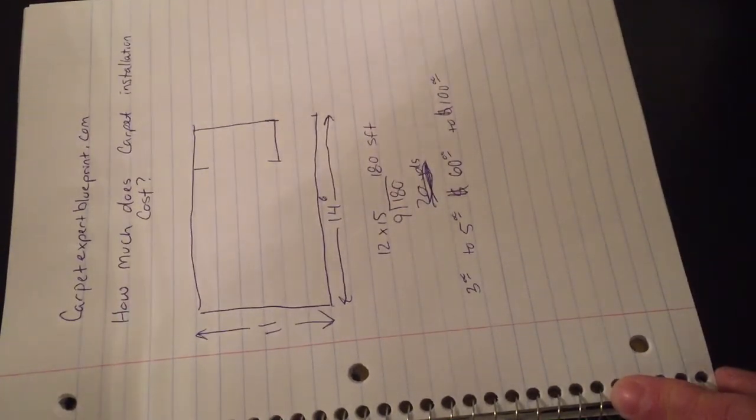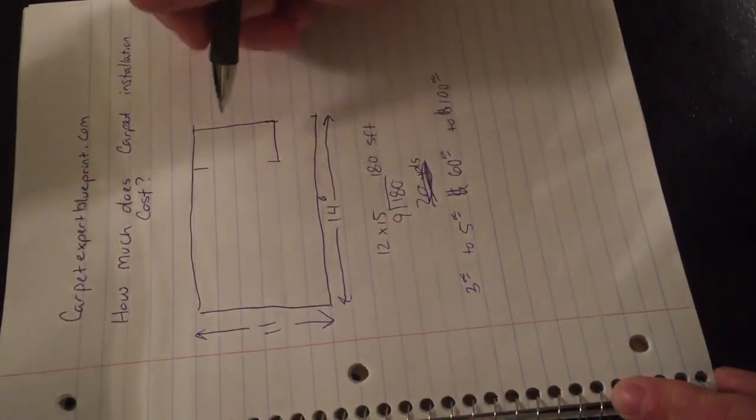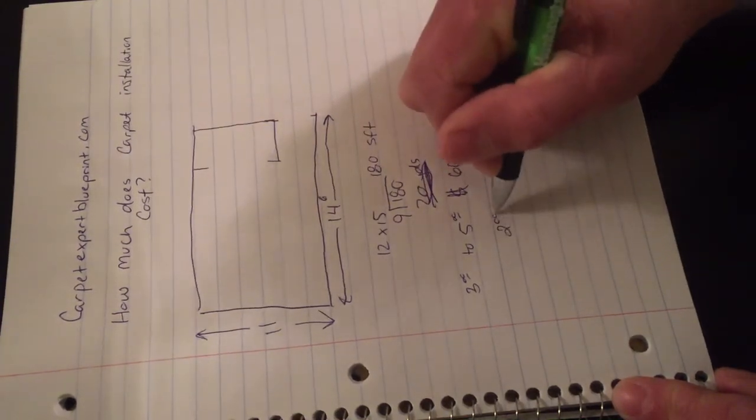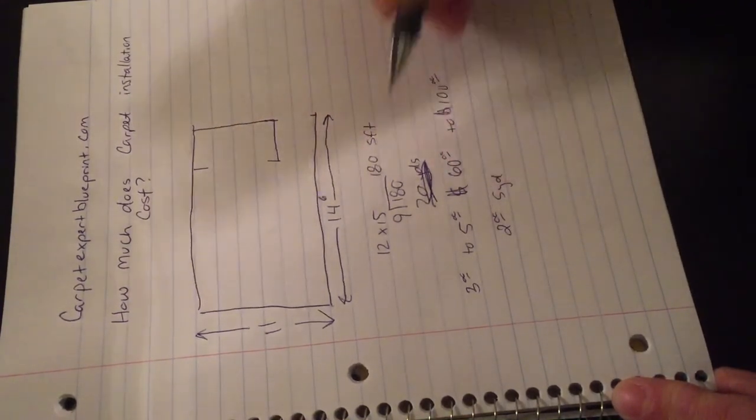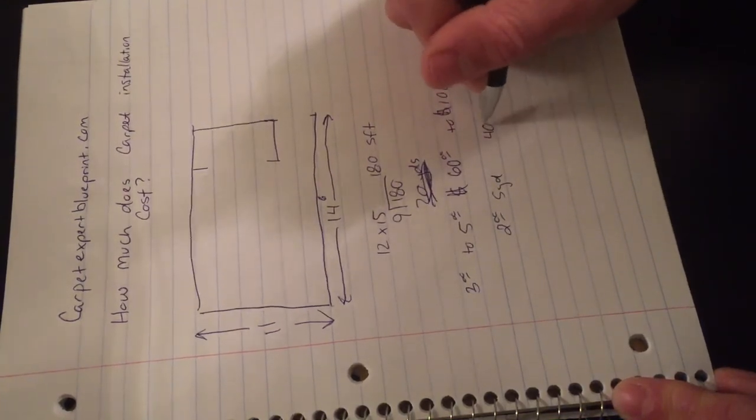Now there's a couple other things you want to keep in mind when you're pricing this out. If you have old dirty carpet in here and you want the installer to remove that for you, well that's typically $2 per square yard as well, so if we have 20 yards at $2 a yard, figure another $40 for that.